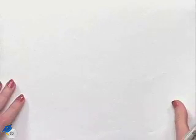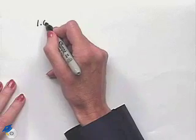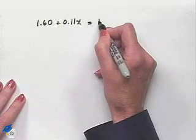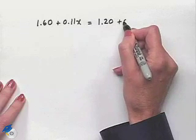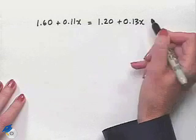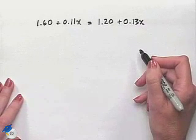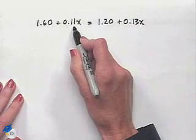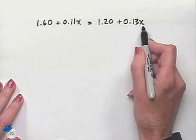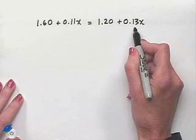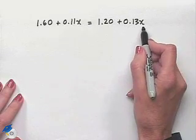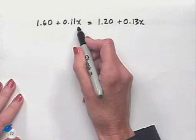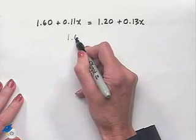Now we have an equation that we can solve. Let's rewrite that. When we want to solve for X, we can accomplish this by noting that we can subtract 11 hundredths X from both sides of the equation. That will allow us to have the variable expression only on one side of the equation. Let's subtract 11 hundredths X from the left to give us 1.60.